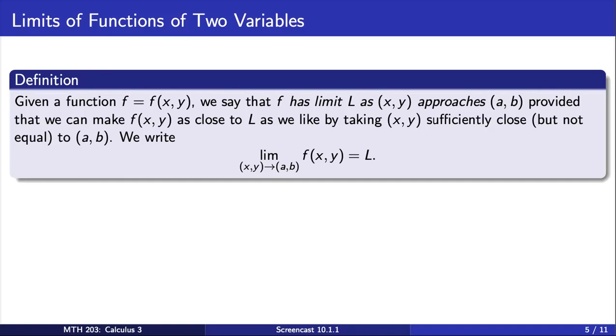For a function f of two variables, we say that f has a limit L as (x,y) approaches (a,b), provided that we can make f as close to L as we'd like by taking (x,y) sufficiently close but not equal to the point (a,b). We write the limit of f as (x,y) approaches (a,b) equals L.